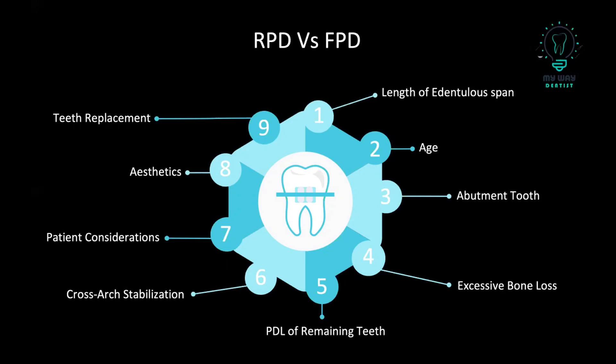The sixth point is the cross-arch stabilization that can be obtained by the RPD, because the major connector gives you cross-arch stabilization against lateral forces and anterior-posterior forces. Also, patient considerations such as age, patient mentality, or the economics of the patient are factors. Regarding aesthetics, with the RPD the teeth can be positioned arising from the base, simulating the gingiva when there is bone loss, so aesthetically it provides a better appearance.